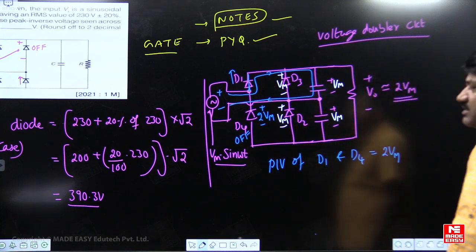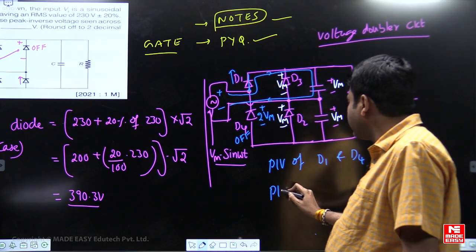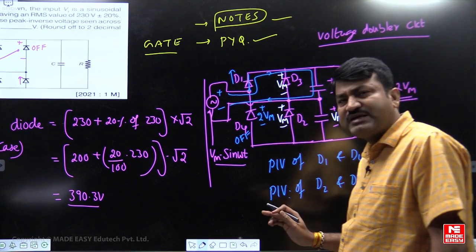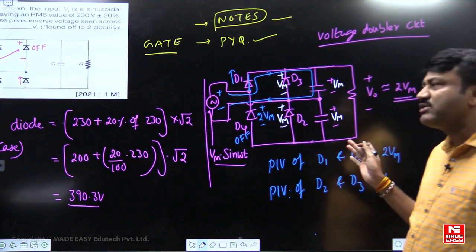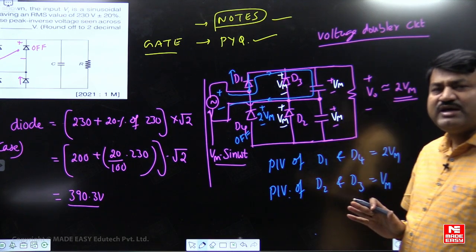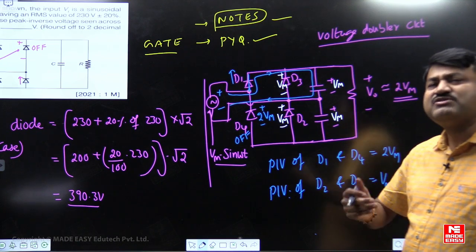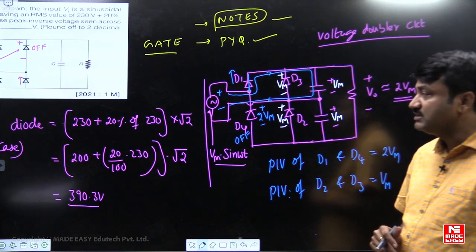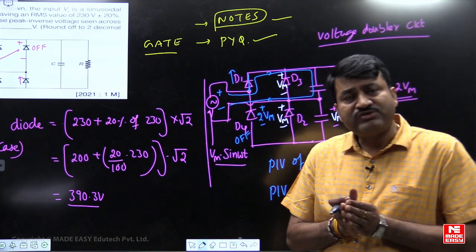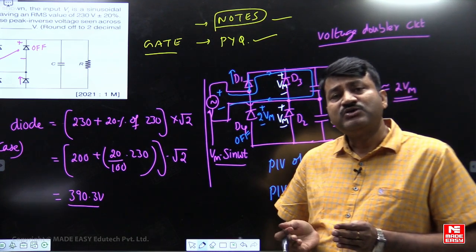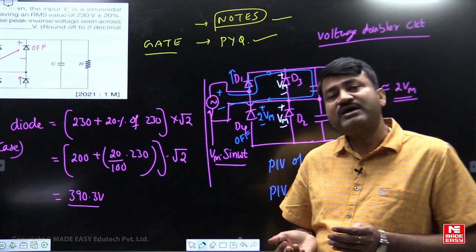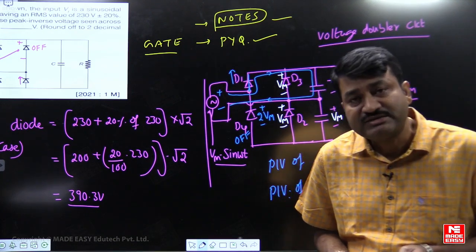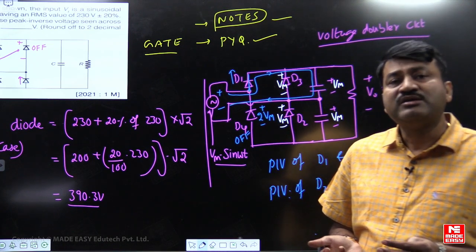So, in the case of a voltage doubler circuit, PIV of diodes D1 and D4 is 2Vm volts, whereas PIV of diodes D2 and D3 is Vm volts. If the examiner specifies PIV individually, you answer like this. If the examiner asks for the worst case PIV rating of a diode, then we consider 2Vm volts. My dear students, when you go through the previous year questions, you will get some idea, and from that idea we can prepare for future questions. I hope you enjoyed this question. Thank you very much, students.